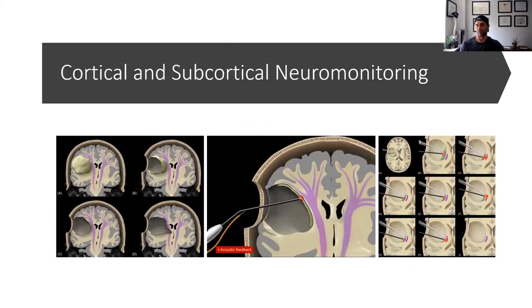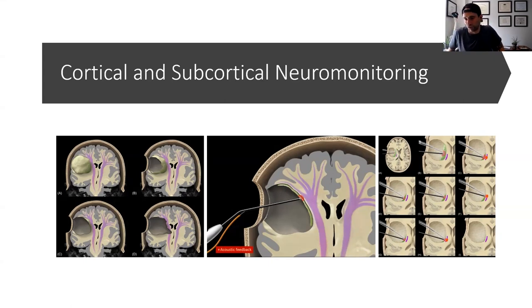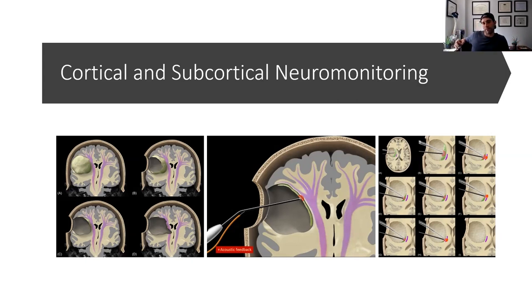In the operating room, you can see your red tumor, and you know there's functional tracks behind you. But sometimes the red tumor blows right through these tracks, so how do you know when to stop? You'd like some real-time feedback. Neural monitoring isn't new — it's been used for a very long time — but we've really pushed the envelope on what we can do.